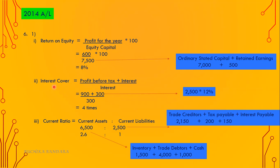Number two: interest cover equals profit before tax plus interest, divided by interest. In the question, they have given profit before tax of 900. The interest comes from the SOFP: 12% bank loan of 2,500 into 12% equals 300. So 900 plus 300, divided by 300 — your interest cover is 4 times.